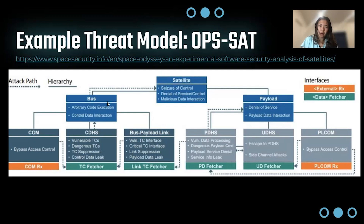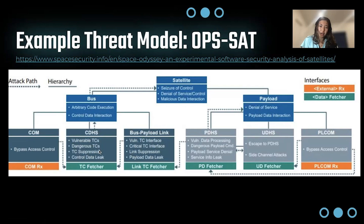Part of the bus can be broken down into three further categories: communications, the command data handling system, and the bus payload link. For the payload, we can break this further into PLCOM, UDHS, and PDHS. On the attack path, for the bus, an attack usually starts with communication from the receiver — it receives something that causes it to bypass access control, then the attacker moves to the TC fetcher and can run a wide range of targeted attacks: exploiting vulnerable TCs, dangerous TCs, TCA suppression, or controlled data link. From there they can compromise the bus and seize control of the satellite.